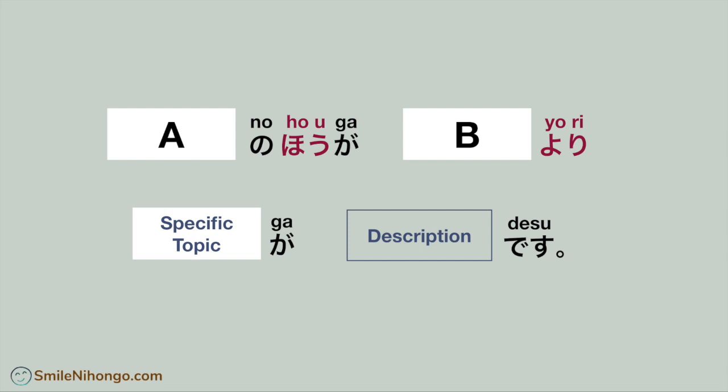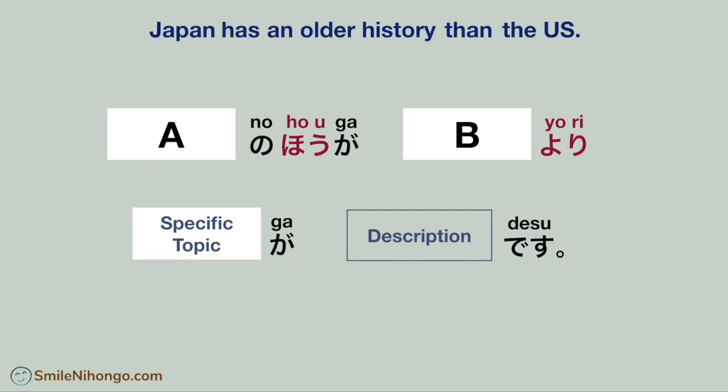This is the summary of how to compare two options based upon a specific topic. Here is a question for you: by using this sentence structure, can you say this in Japanese? 'Japan has an older history than the US.' You may need to look up some vocabulary in your dictionary to complete this sentence. You can leave your own translation in the comment area.